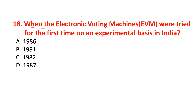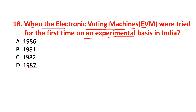When were Electronic Voting Machines (EVMs) tried for the first time on an experimental basis in India? Options are 1986, 1981, 1982, or 1987. The correct option is 1982.